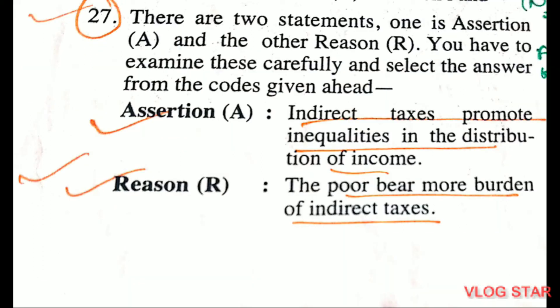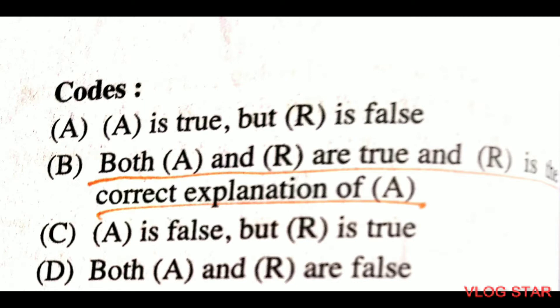Question number 27, assertion-reason. Assertion: indirect taxes promote inequalities in distribution of income. Reason: the poor bear more burden of indirect taxes. Both assertion and reason are correct, and the reason is the correct explanation of the assertion.